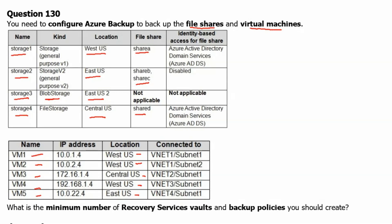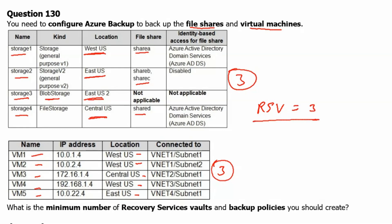Since our resources are in different regions, we require multiple recovery service vaults. Storage 1 is in West US, Storage 2 in East US, Storage 3 in East US, and Storage 4 in Central US — giving us three regions total. For virtual machines, we similarly have West US, Central US, and East US. Therefore, three recovery service vaults are required.